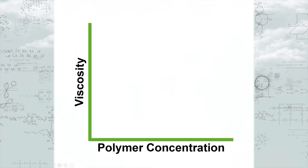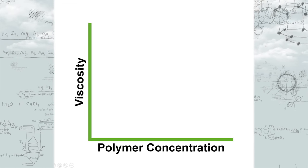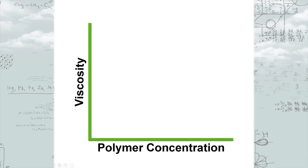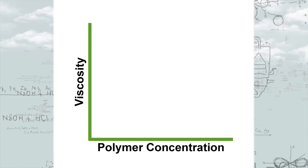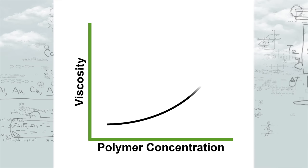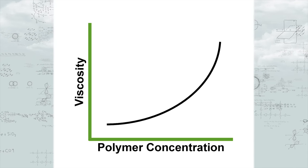Rheology modifiers are thickening polymers. Thickening is associated with polymer concentration. A solution containing low polymer concentration is relatively thin, or in other words, has low viscosity. Viscosity increases at higher concentrations.